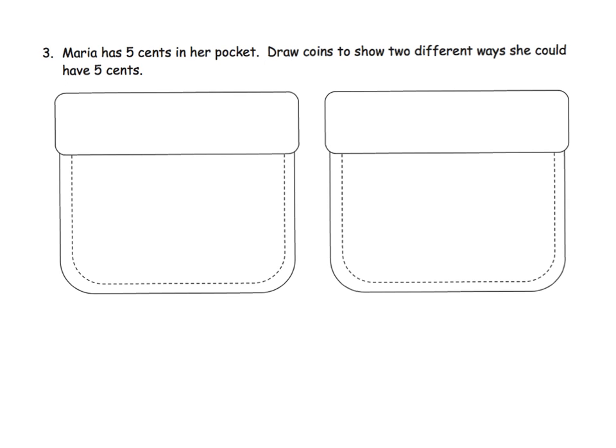So now we're getting to some problem solving. And the thing I love about Eureka Math is that it introduces problem solving constantly, not just at the word problems at the end of the chapter or something. It really is always developing in our students problem solving. So Maria has five cents in her pocket, draw coins to show two different ways that she could have five cents. Well, what are two different ways? Well, one way is she could have five pennies, one penny, two, three, four, five. So that's one way. And another way she could have five cents in her pocket is she could just have a nickel.